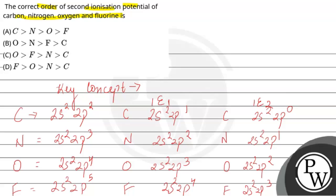Now for the second ionization enthalpy — nitrogen's cation after IE1 has a 2s²2p² configuration. However, its first ionization enthalpy is more stable because it has a half-filled subshell contribution. So removing a second electron from nitrogen is very difficult, meaning its second ionization enthalpy is extremely high. That is why nitrogen is the exception here.